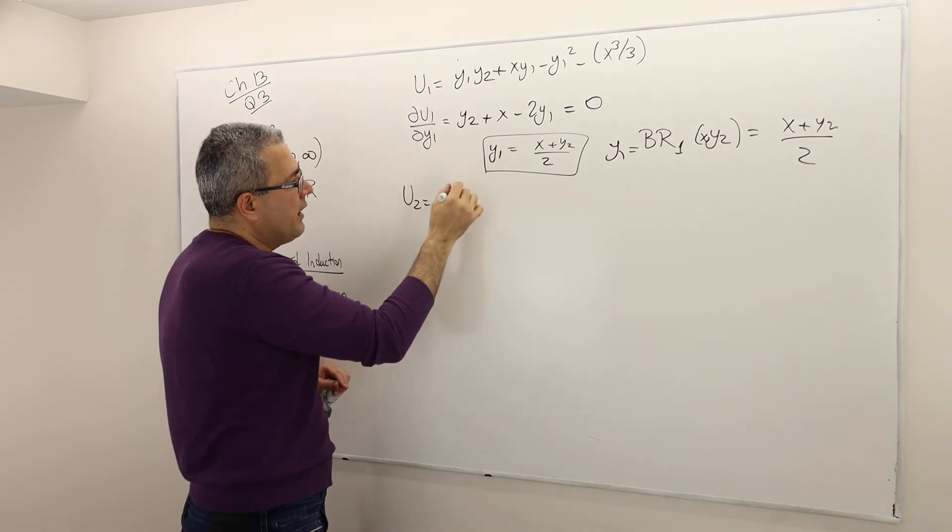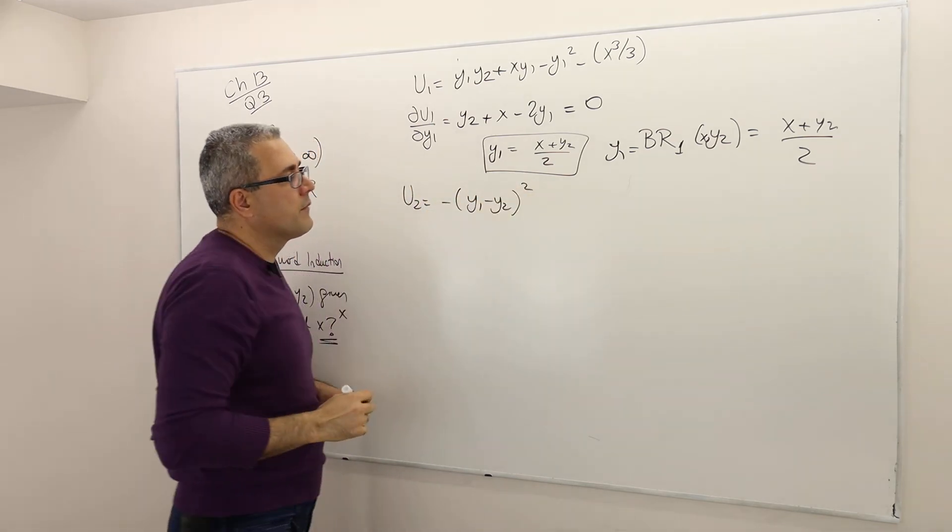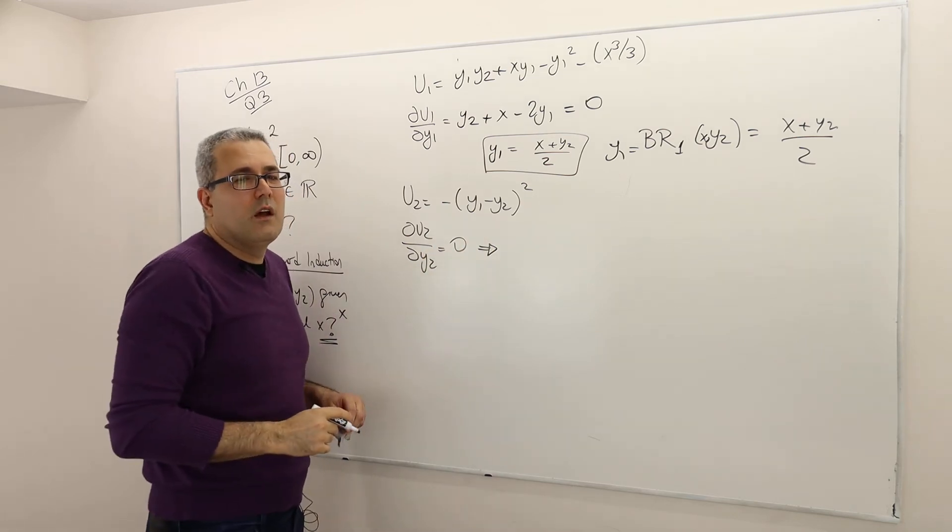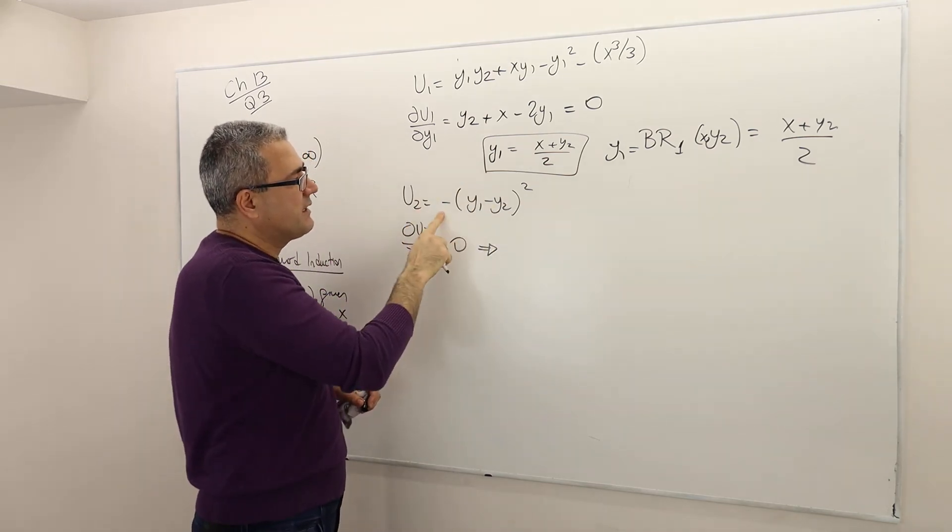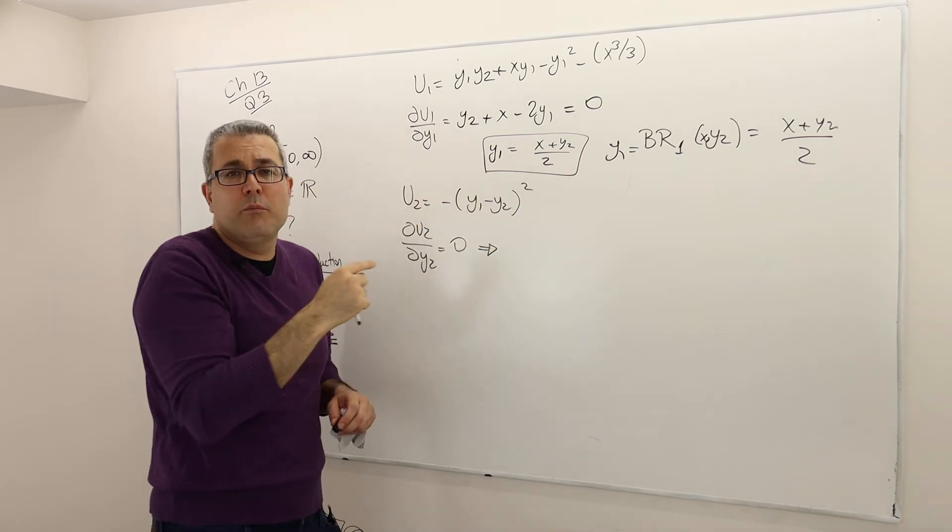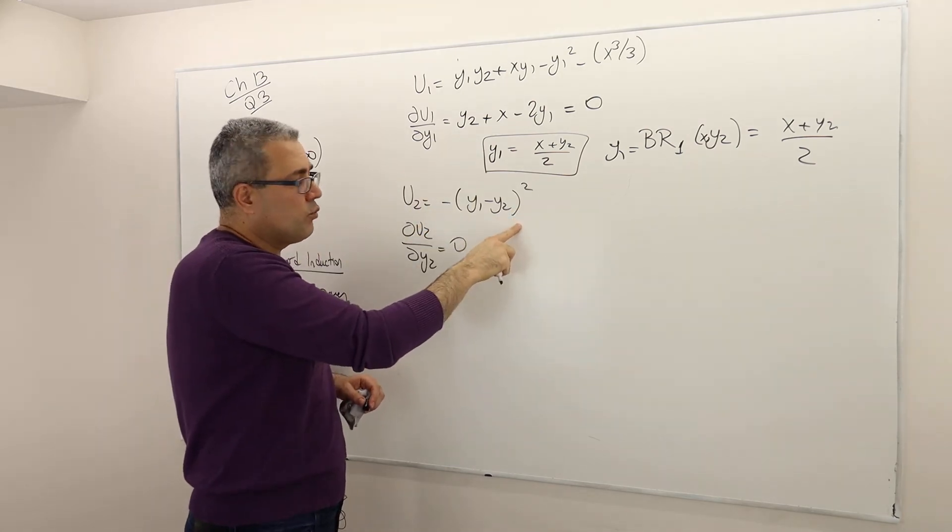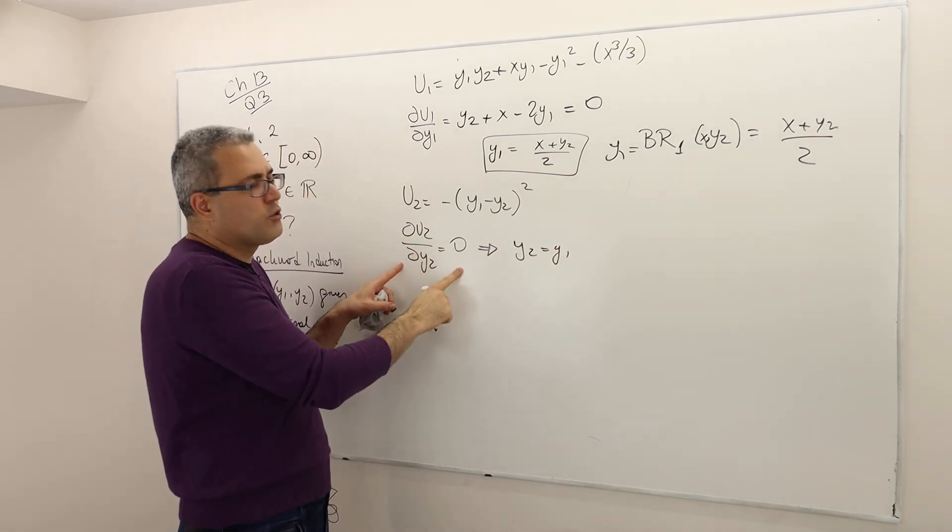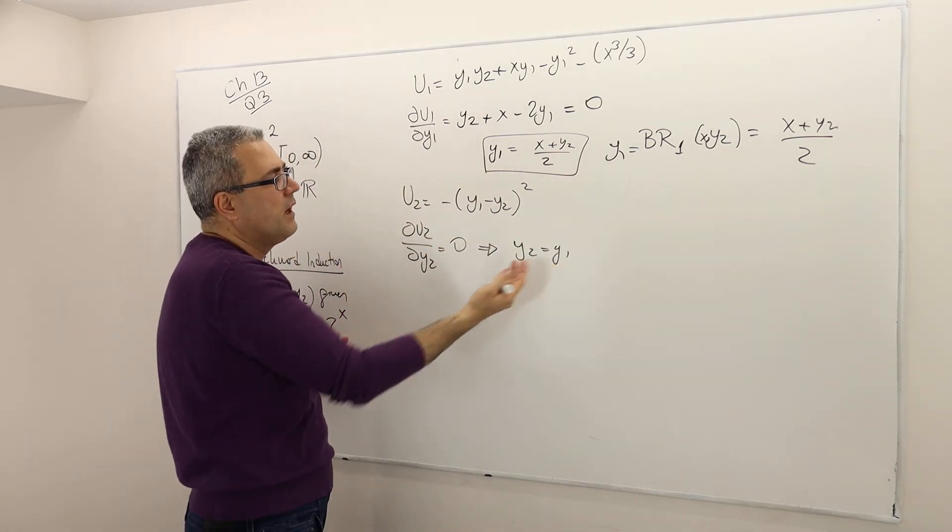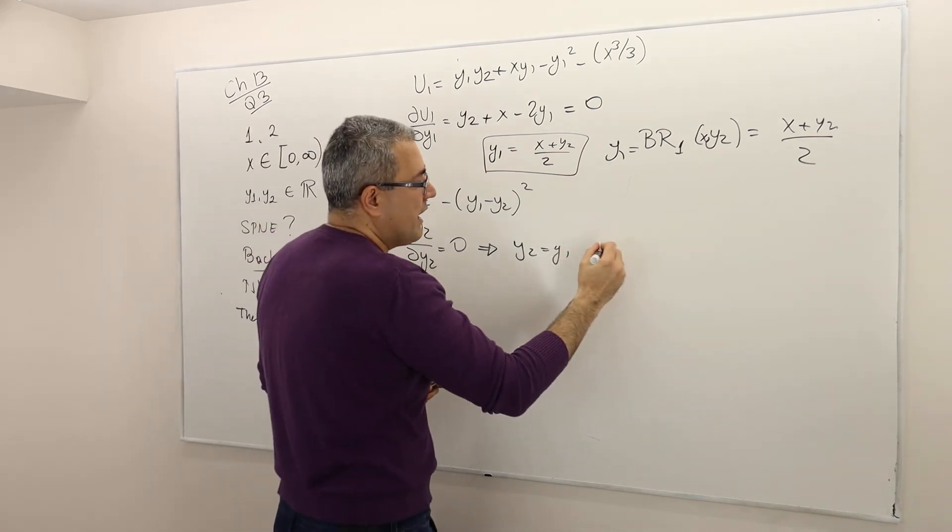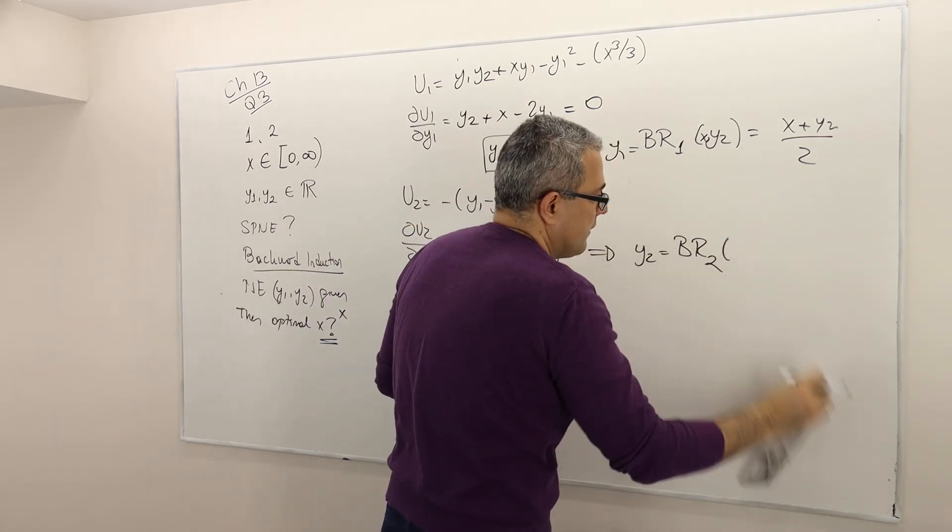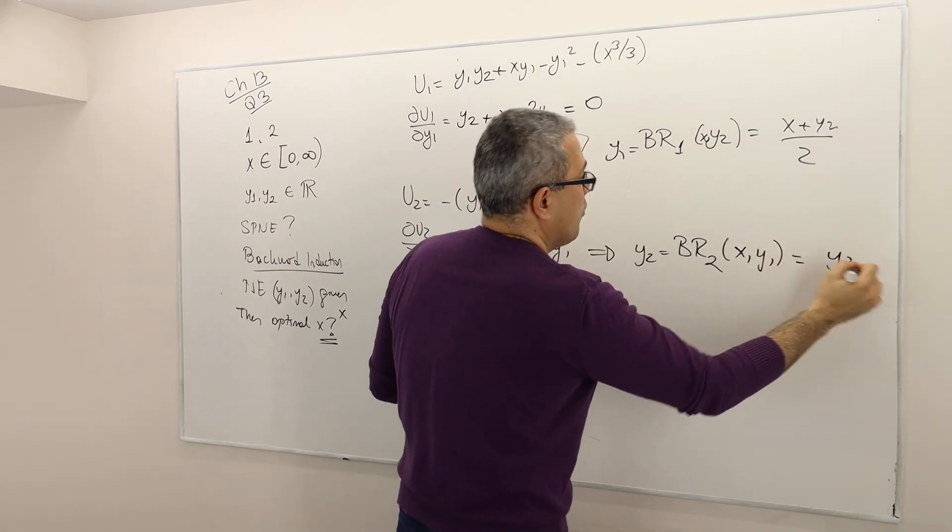Same thing for player 2. It's -(y1 - y2)². You take the derivative, set it equal to 0, and solve for y2. But there's actually an easier way. I am maximizing something minus square. This guy is always positive. So this minus thing will be at most 0 when y2 equals y1. If you solve this, you're going to get exactly the same thing. I'm just cheating because I know that this utility function can be maximized only if y2 equals y1. So that means the best response of the second player given X and Y1 is equal to Y1.